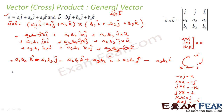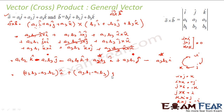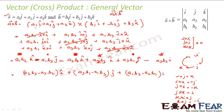Now clubbing the î, ĵ, and k̂ terms: the î component gives (A2B3 − A3B2)î; the ĵ component gives (A3B1 − A1B3)ĵ; and the k̂ component gives (A1B2 − A2B1)k̂.